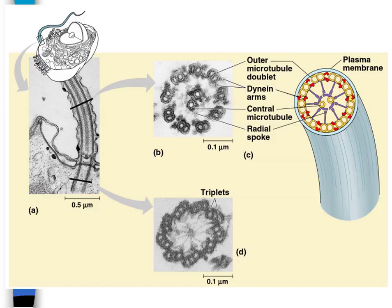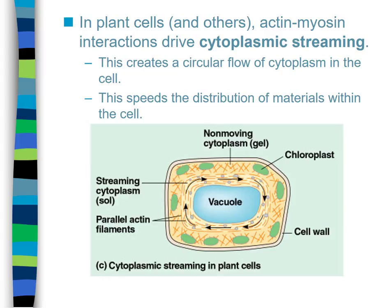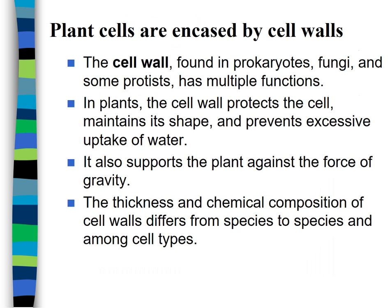Microfilaments play a huge role in muscle movement. There are two types of proteins: actin (the microfilaments) and myosin (the motor protein), and they work together to make your muscles contract and relax. Plants also have movement called cytoplasmic streaming — actin and myosin help move things around inside a plant cell.